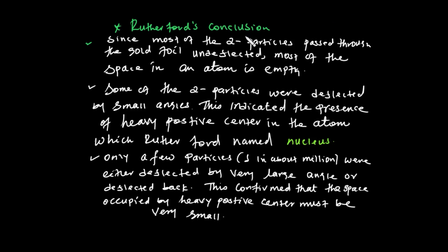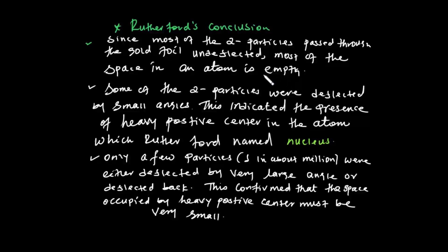From the experiment, Rutherford concluded that most of the alpha particles passed through the gold foil and were deflected. Since most of the alpha particles passed through, most of the space in an atom is empty. The atom has a positive center — the nucleus — and electrons outside it.